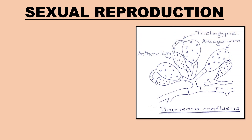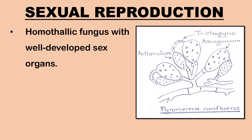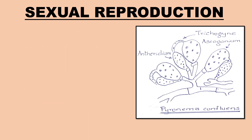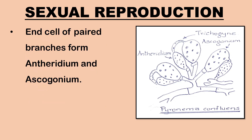Let us understand sexual reproduction in Pyronema. Pyronema is a homothalic fungus; the two kinds of sex organs are produced on the same thallus. The hyphae bearing sex organs become forked at one or more points and branch repeatedly in a dichotomous manner. The male sex organ, antheridium, and the female sex organ, ascogonium, develop terminally on separate sister branches of the dichotomy.